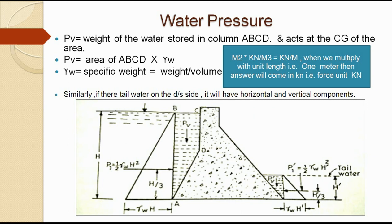But whenever the upstream face is inclined, the vertical component of water pressure also comes into the picture. The vertical water pressure is equal to the weight of water stored in the A-B-C-D column, and it acts through the centroid (C.G.) of that area. That is equal to area of A-B-C-D into γw, giving units of kilo-Newtons per meter, because we consider only two dimensions — width and height of the dam — not the length.